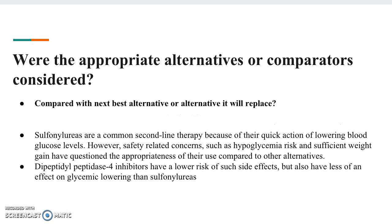Were the appropriate alternatives or comparators considered? You want to look at whether the study compared the intervention to the next best alternative or the one it will replace. The study did examine how sulfonylureas are a common second-line therapy due to their quick action in lowering blood glucose levels, but recent safety concerns such as hypoglycemia risk and weight gain have questioned their appropriateness compared to DPP-4 inhibitors, which have a lower risk of those side effects but also less of an effect on glycemic lowering than sulfonylureas.